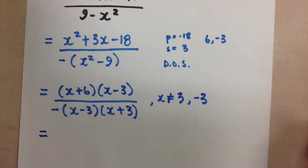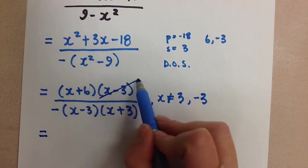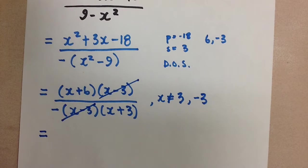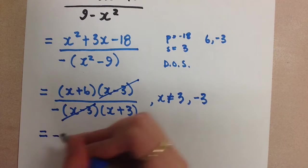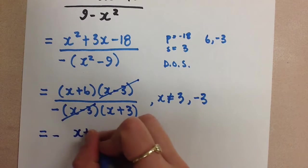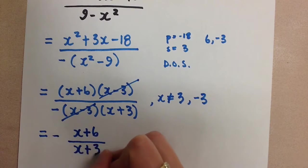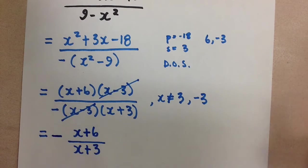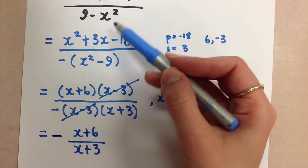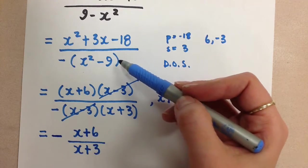Okay, so last, we see that we have a common factor, x minus 3, in the numerator and the denominator. So we're going to cancel those out. And what we're left with is x plus 6 in the numerator and x plus 3 in the denominator. This whole thing was negative because I had rearranged the order of this equation here.